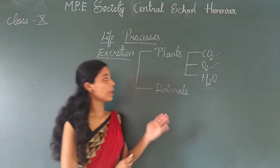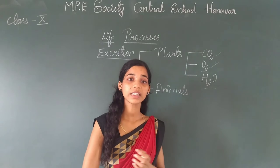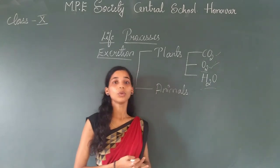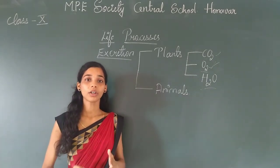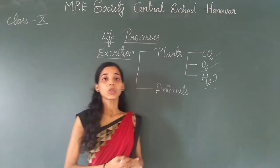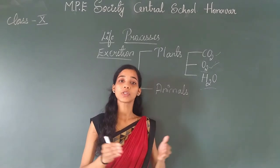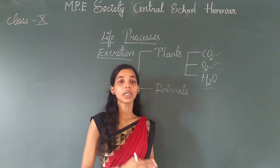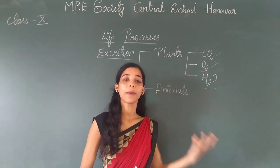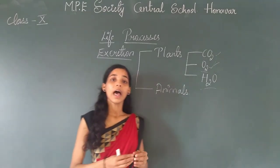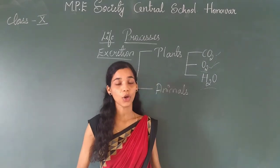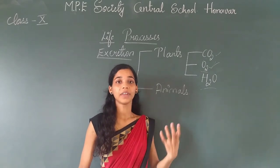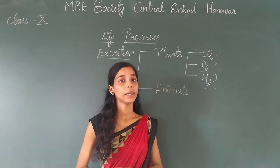Apart from these three, plants also generate other waste products like aromatic oils, tannins, and alkaloids in small amounts. Since plants do not have specialized organs to excrete this waste, they store it in different parts of the plant body — such as the leaves, the bark of the trees, or the fruits. This waste is eventually excreted when the leaves shed off, the bark of the trees peels, and the roots fall off.